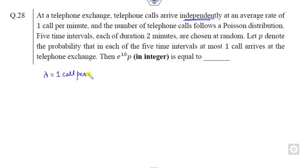So that is the mean of the Poisson distribution. Five time intervals, each of duration two minutes - sorry, five minutes, five time intervals. So it is one, it is two, it is three, and it is four. So these are five durations.